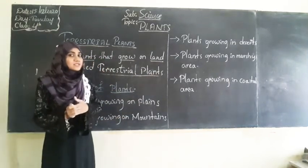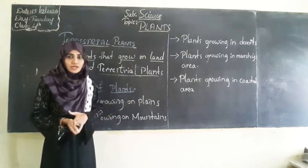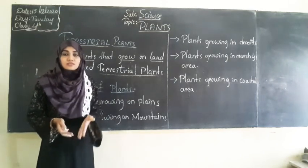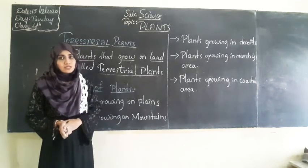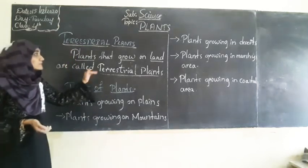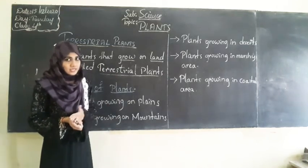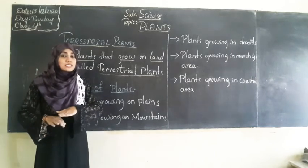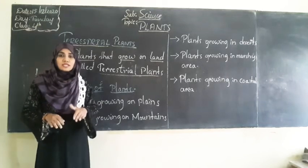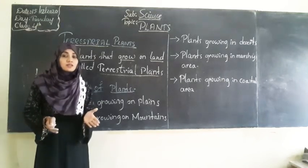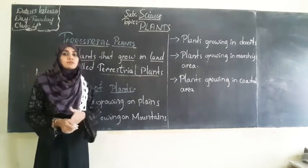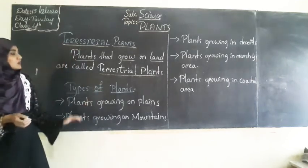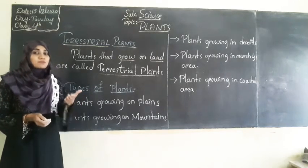You have seen some plants in water and some plants on land. The plants which are present on the land, which grow in the soil, are called terrestrial plants. Now even within terrestrial plants, there are many types again. The earth's land is not the same everywhere — there are different types of land and different types of soil. So based on the types of land surface and soil, plants grow accordingly. Let us see what types of plants are present based on their habitat.